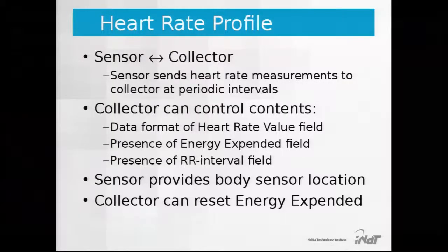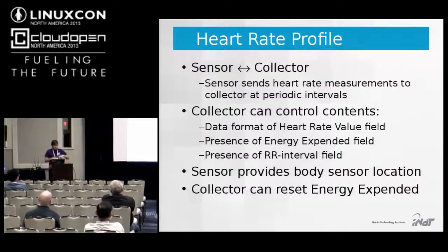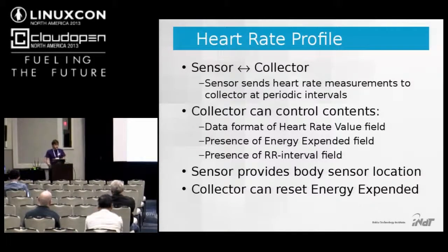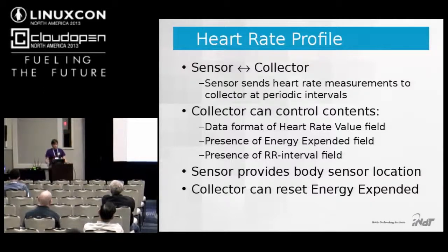The Heart Rate profile involves a heart rate sensor (a belt for measuring heart rate) and a collector receiving the measurements. Besides heart rate itself, the data can include an energy expended field — a counter of energy spent since a certain point — and the RR interval, which is the time between two heartbeats. Whether these fields are included is configurable by the collector using a descriptor. There is also a characteristic providing body sensor location, and a separate characteristic to reset the energy expended counter.